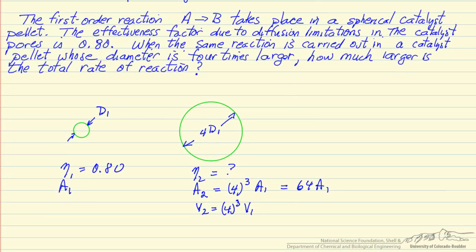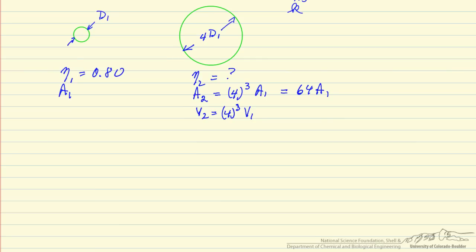The external surface concentration of a reactant is the same in both cases, and the rate constant is the same. We're doing this isothermally, and so what we're interested in then is the ratio of the rate of reactions at these two conditions. So we first need to determine the effectiveness factor, and so in order to do that we need to determine the Thiele modulus.